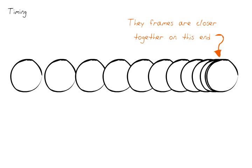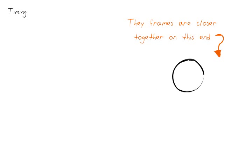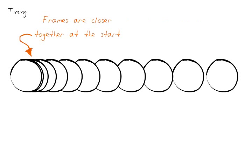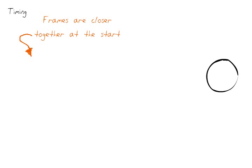For example, if you bunch up most of the frames towards the end of an action, then that action will slow down as it goes towards the end. And if you bunch them up towards the beginning, then the action will start out slow and speed up towards the end.